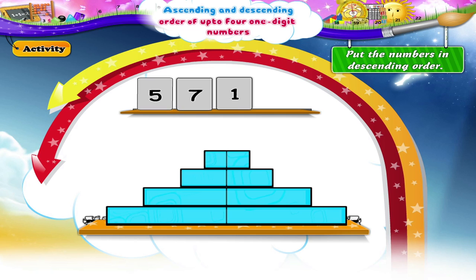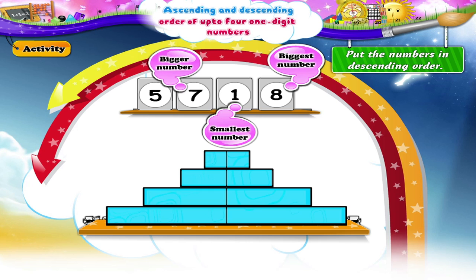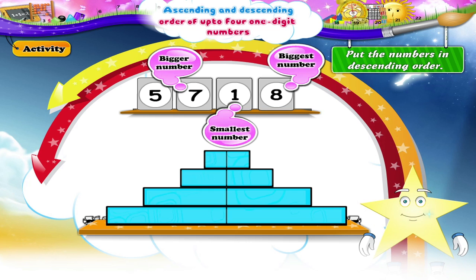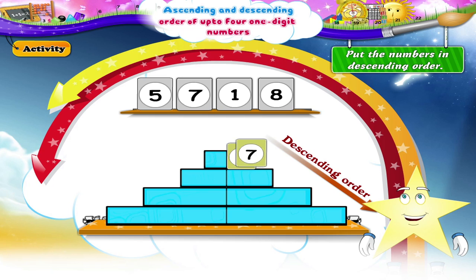The next set of numbers is five, seven, one, eight. The biggest number is eight. The smallest number is one. Between five and seven, seven is the bigger number. Starry, the numbers arranged in descending order are eight, seven, five, one.